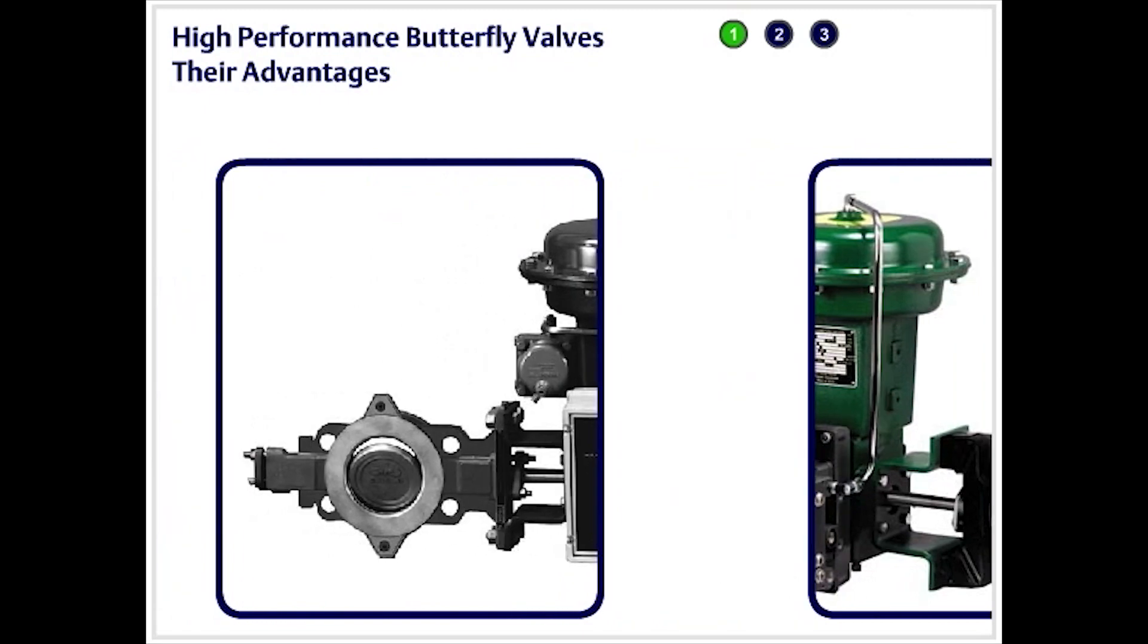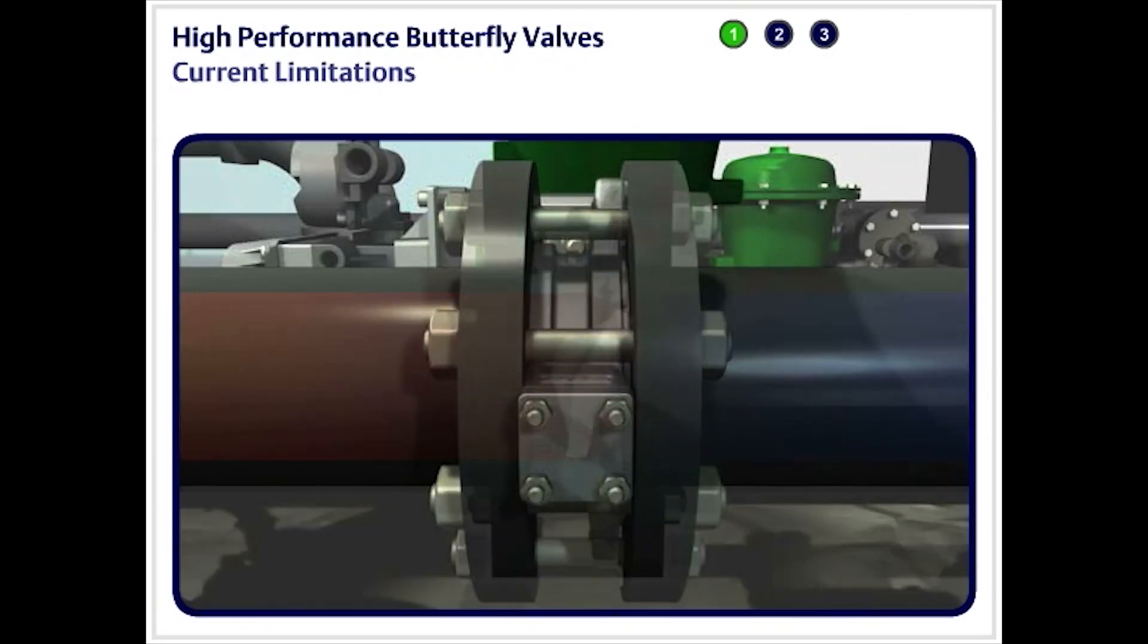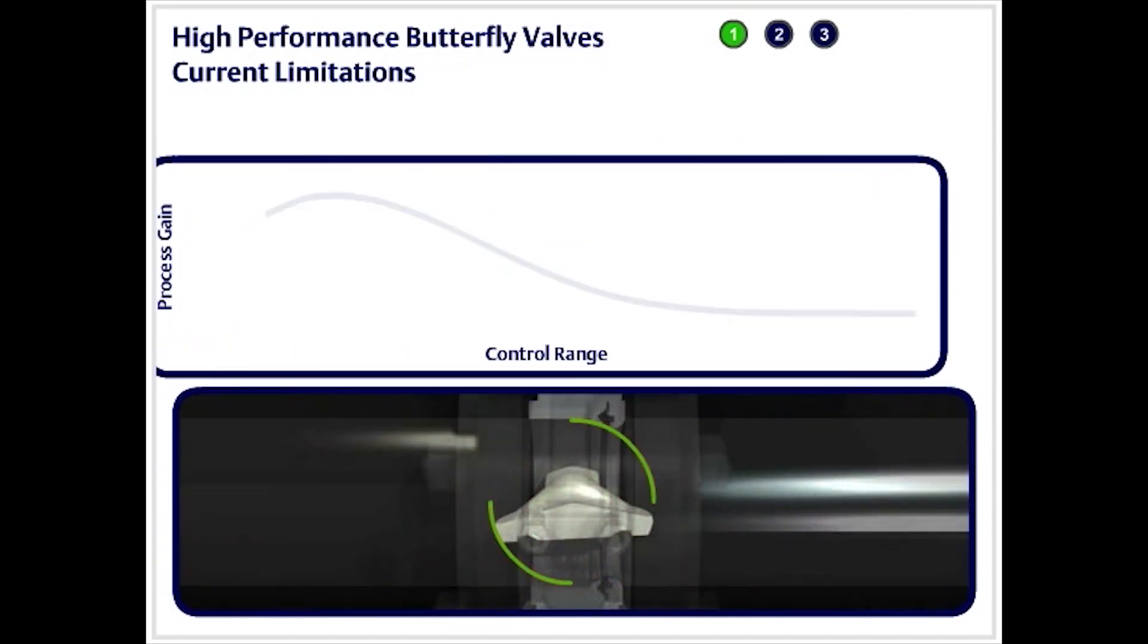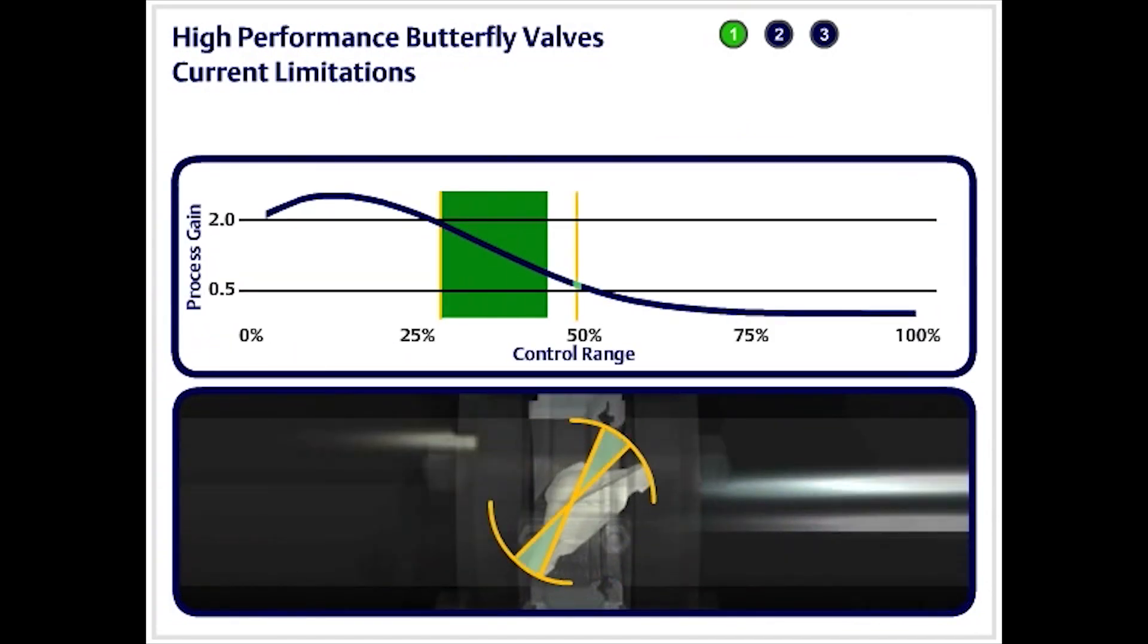However, the majority of industrial applications involve fast processes and varying pressure drops—situations in which the butterfly valve performs poorly. This lack of control can also be seen at both low and high flow rates, which means the butterfly valve's effective control range realistically occurs between 30% and 50% open.